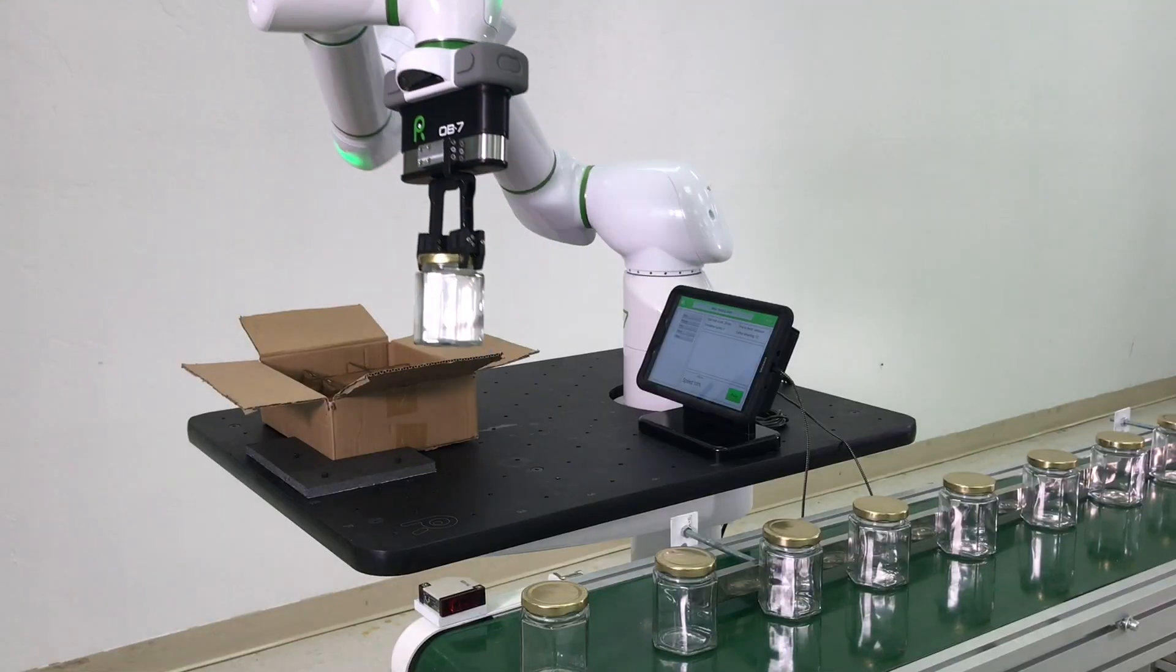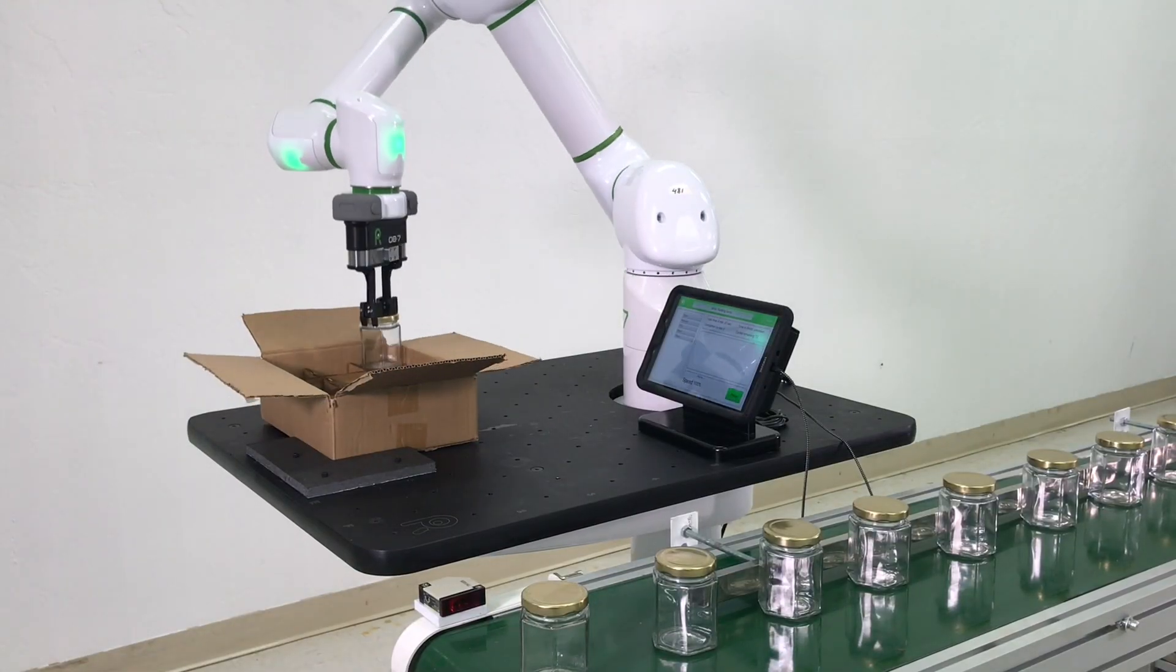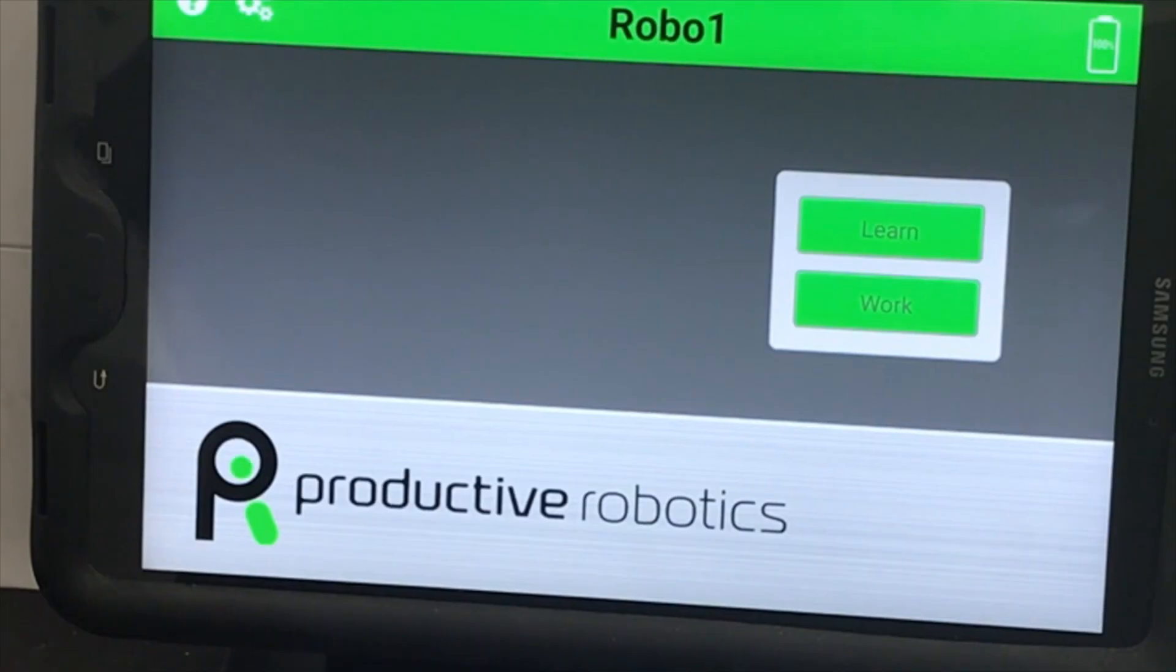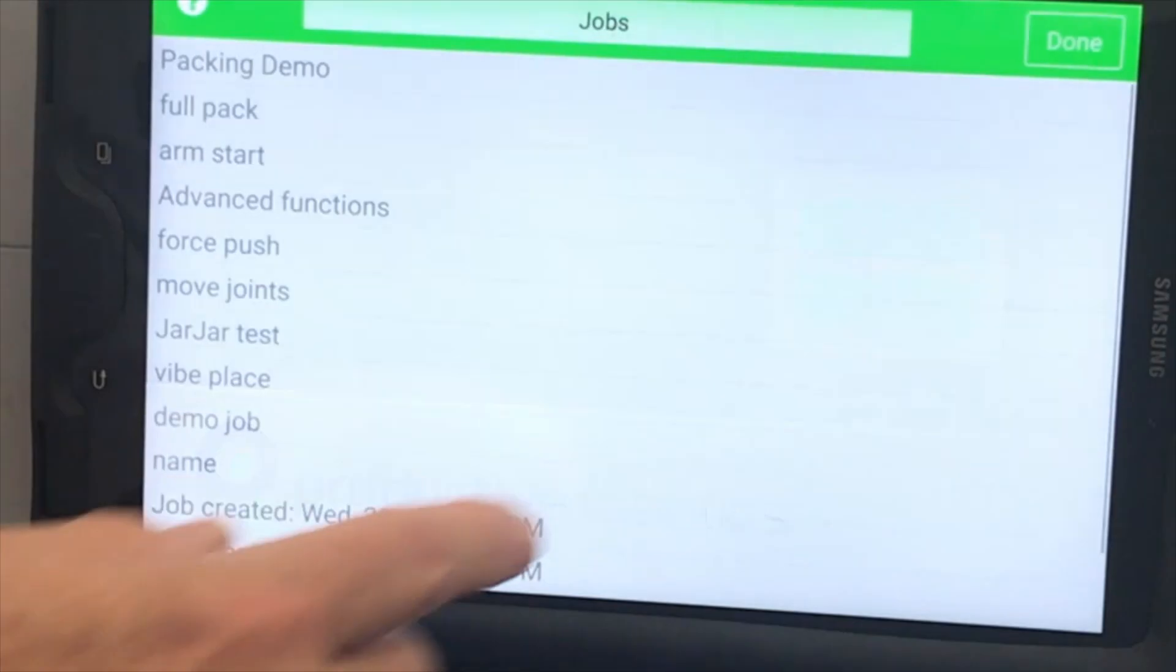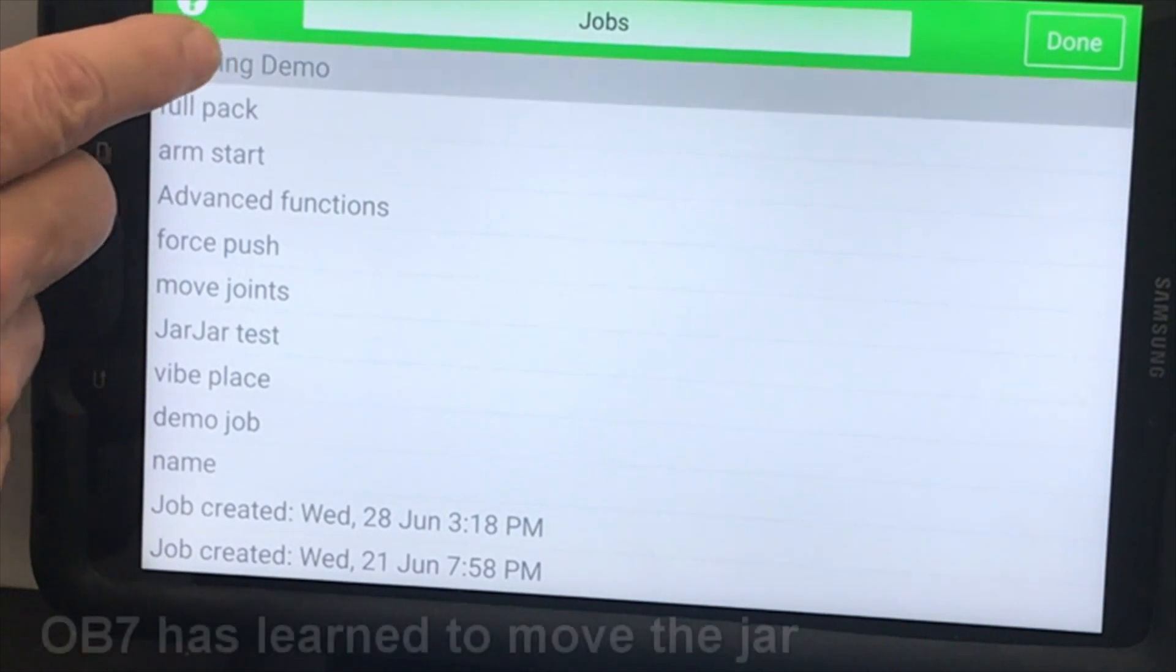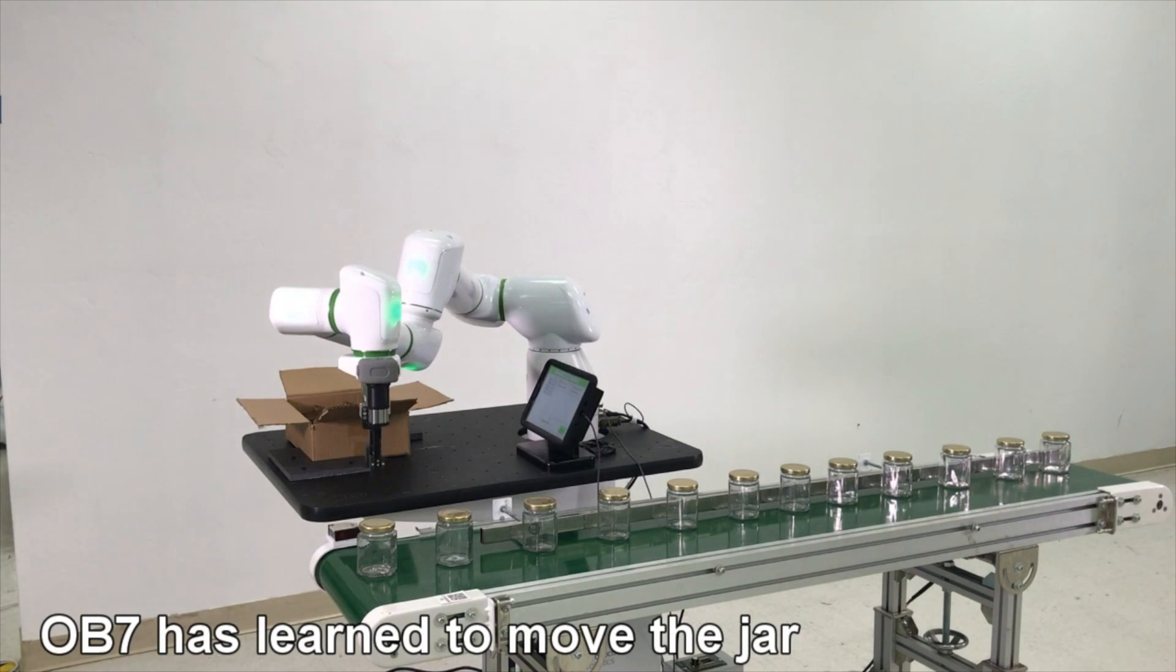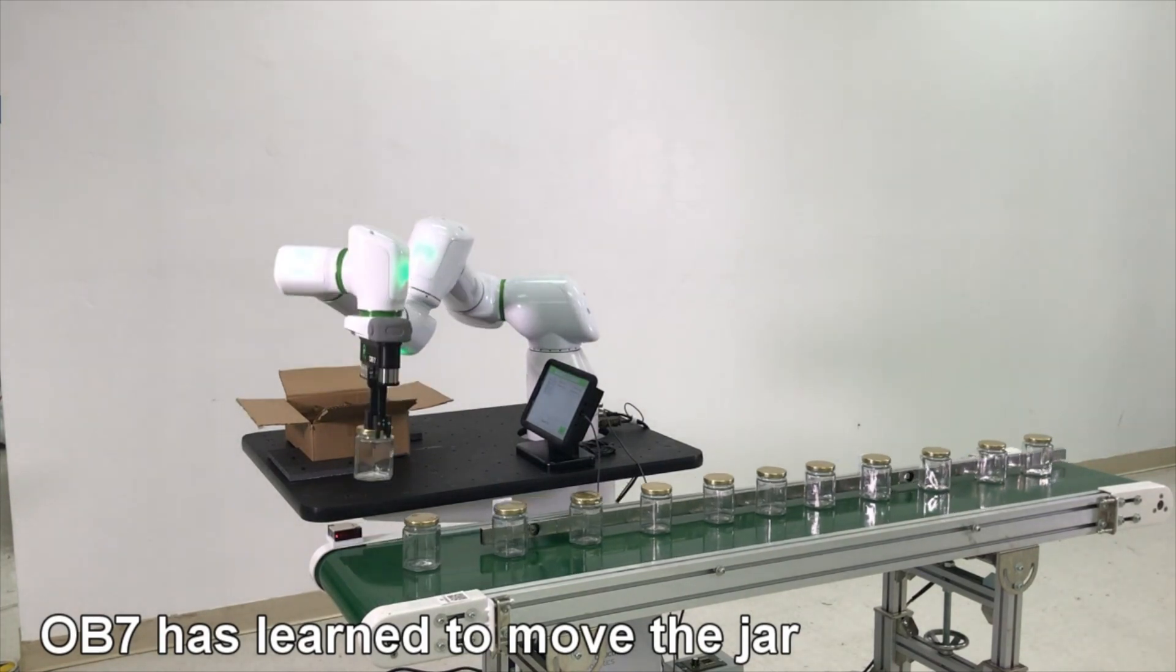Press done and we'll run the packing demo job. Start the job by pressing work, selecting the new packing demo, then pressing go. And that's how to train your robot.